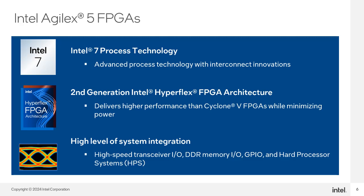In addition to traditional ALM user registers, the Intel HyperFlex core architecture adds bypassable registers called hyperregisters, distributed throughout the FPGA fabric, available on every interconnect routing segment and at the inputs of all functional blocks. In the second-generation Intel HyperFlex core architecture, Intel optimized the number of registers to improve timing closure time and fabric area utilization. The HyperAware design tools automatically utilize hyperregisters to achieve maximum core clock frequency.